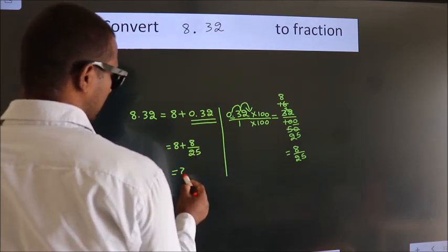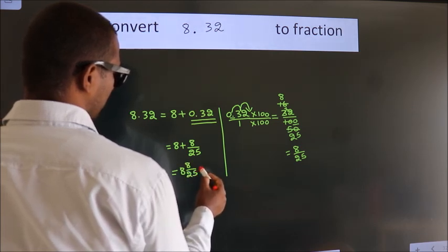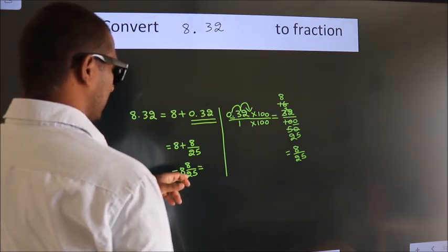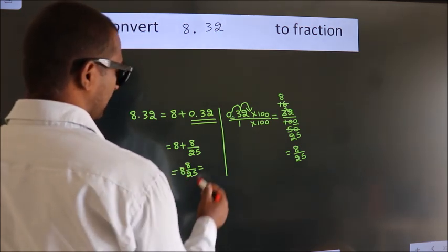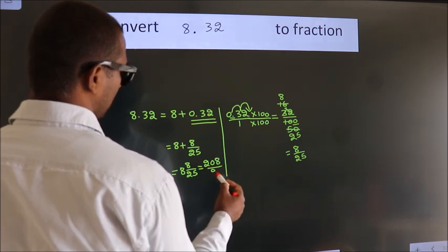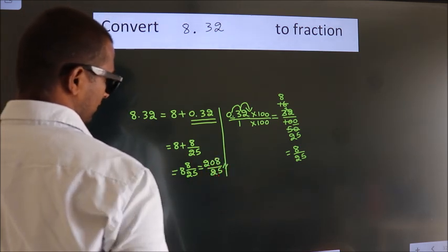In mixed fraction it is 8 and 8 over 25. And in improper fraction it is 8 into 25, 200 plus 8 by 25. 200 plus 8 is 208 by 25, our fraction.